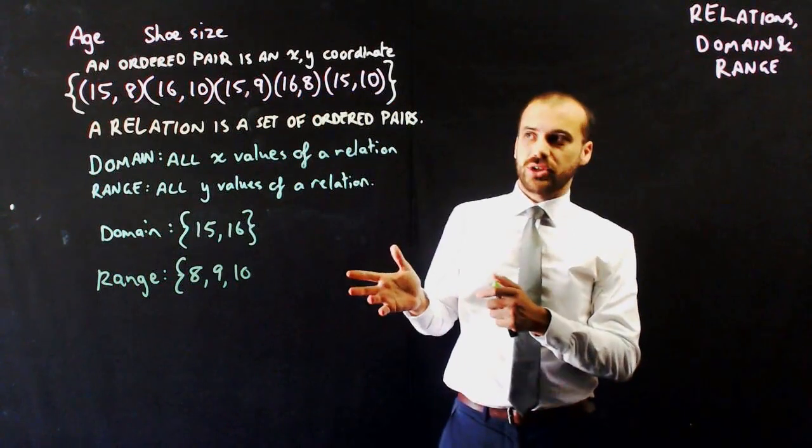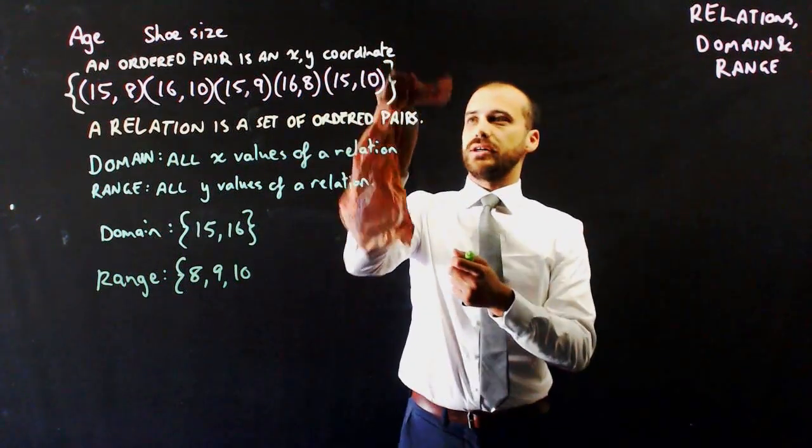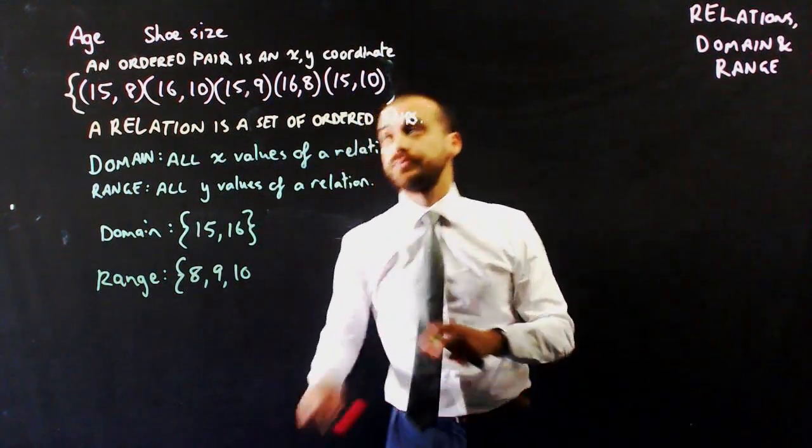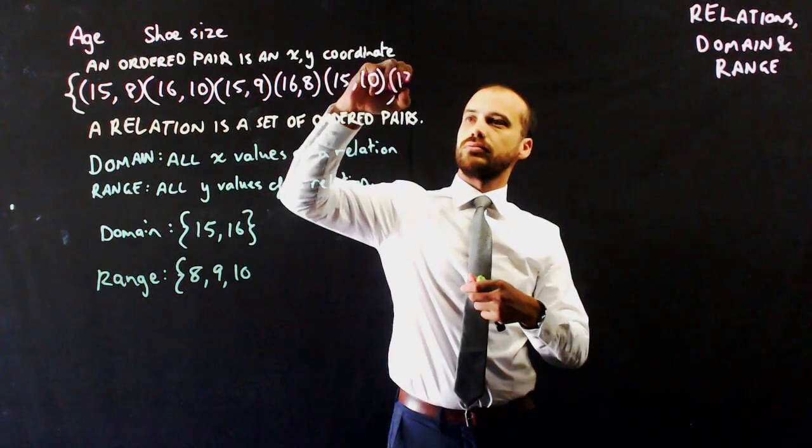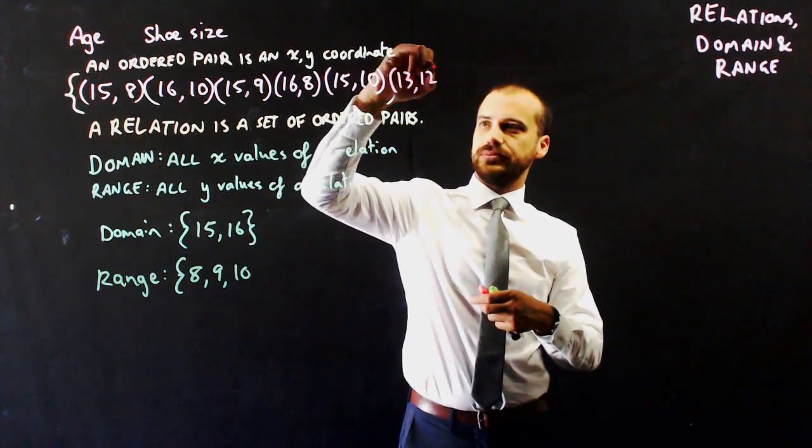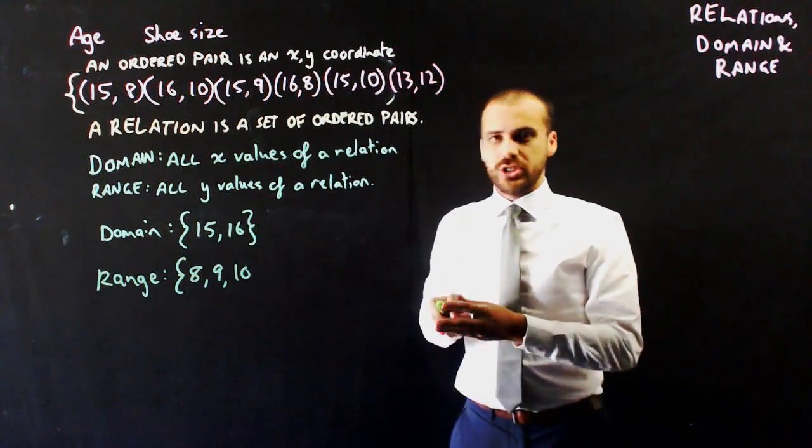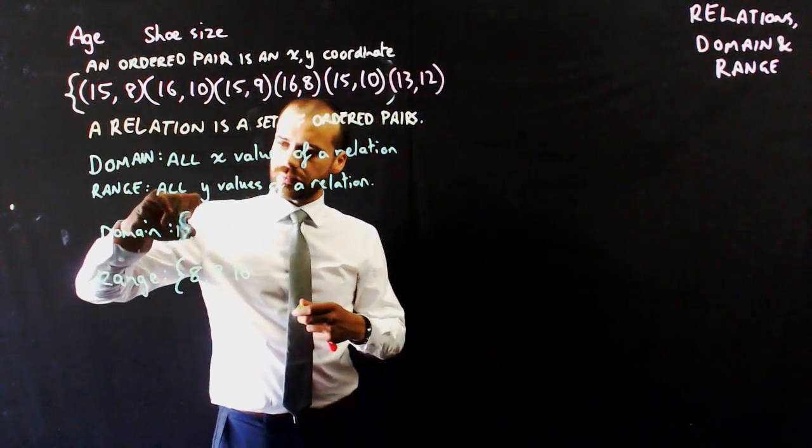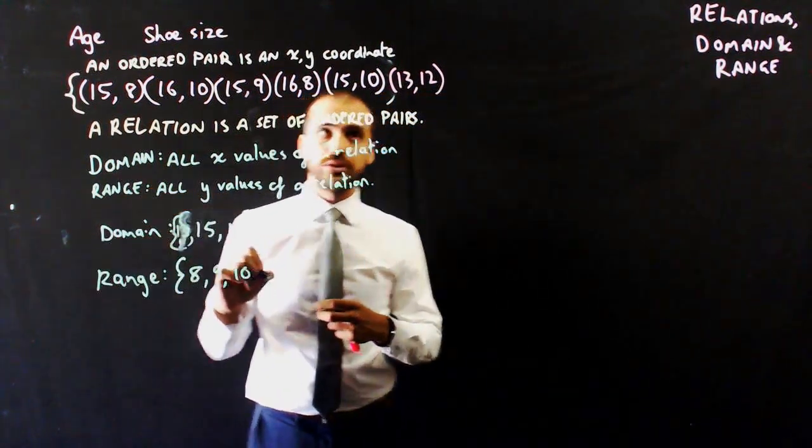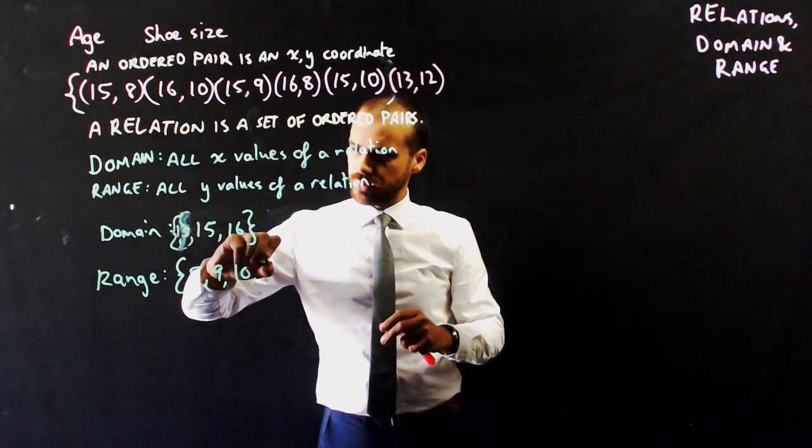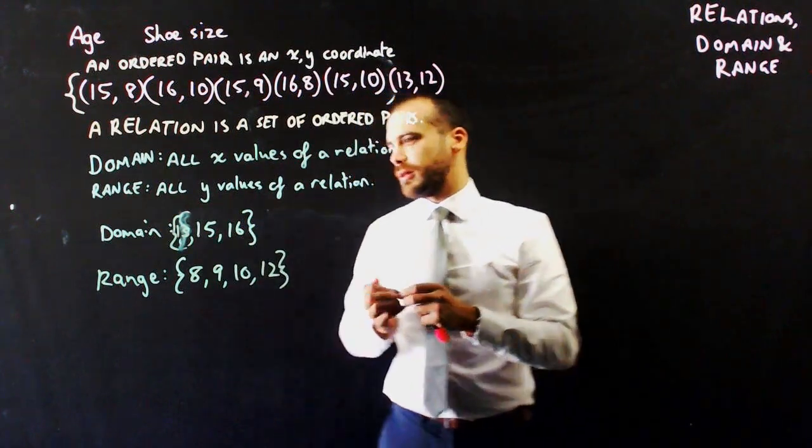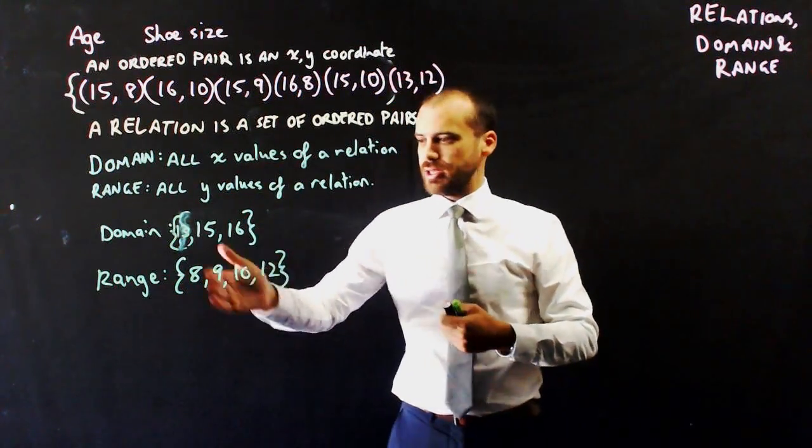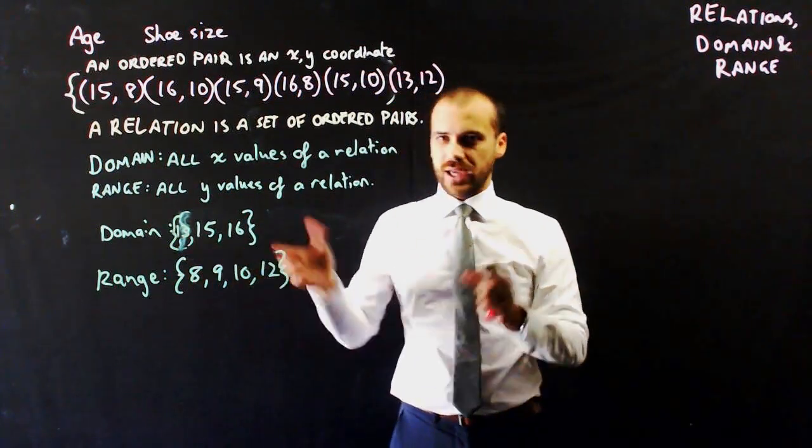Now, it doesn't have to be sequential. So if I added another student to this, say, a younger student with large feet, then our domain changes slightly. A 13-year-old student with size 12 feet. All right, so my point is that it was in order, like it was 15, 16, 8, 9, 10. But we can have gaps in there as well.